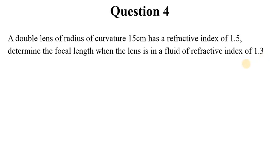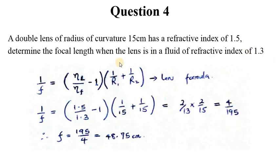This is a lens in some system and the environment is a fluid of refractive index 1.3. The question is to determine the focal length when the lens is in a fluid. In other words, that environment will affect the value of F. 1 over F is given by the lens formula.